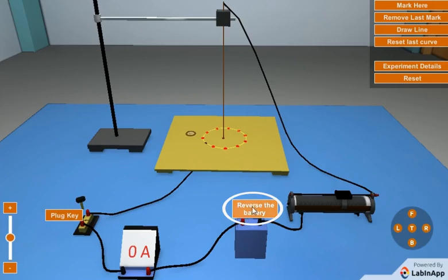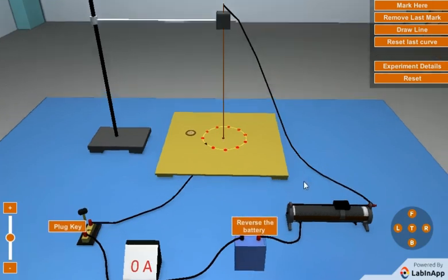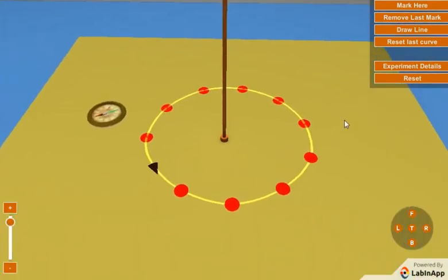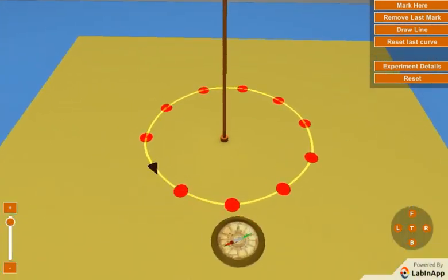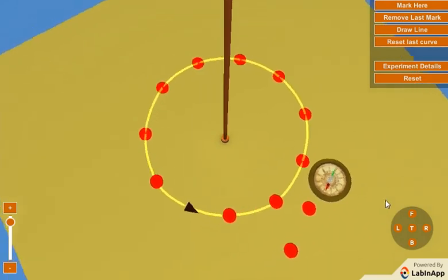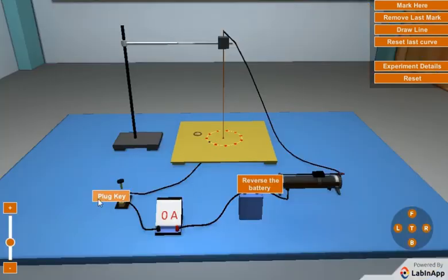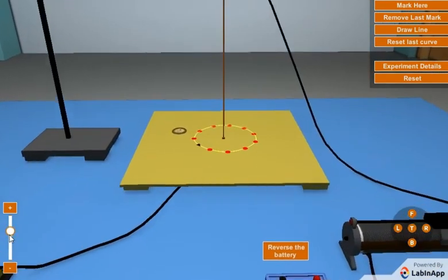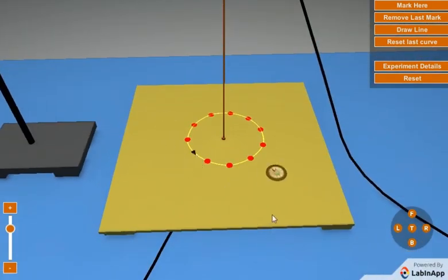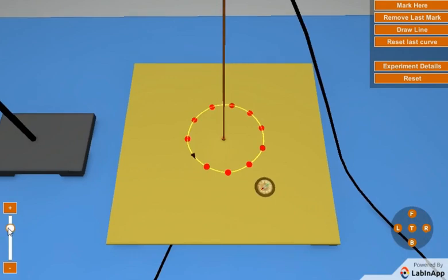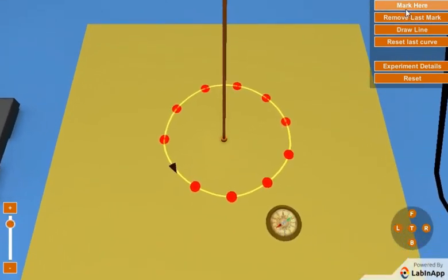Click here to reverse the polarity of the battery, and repeat the same procedure to draw the magnetic lines in the opposite direction.